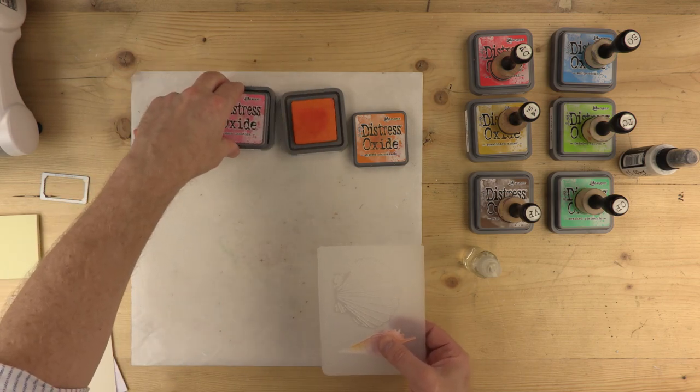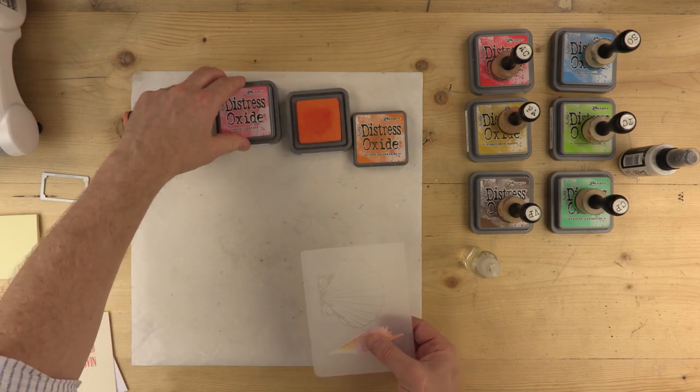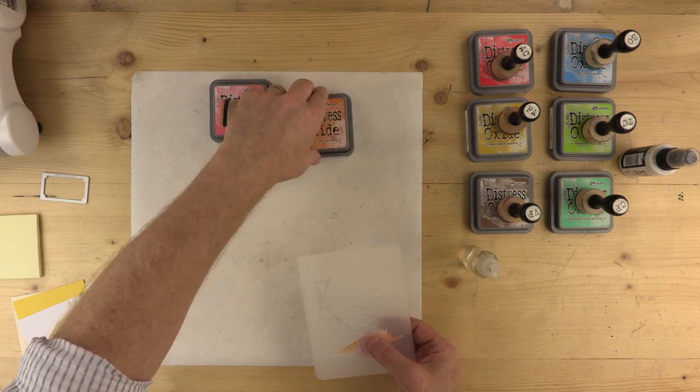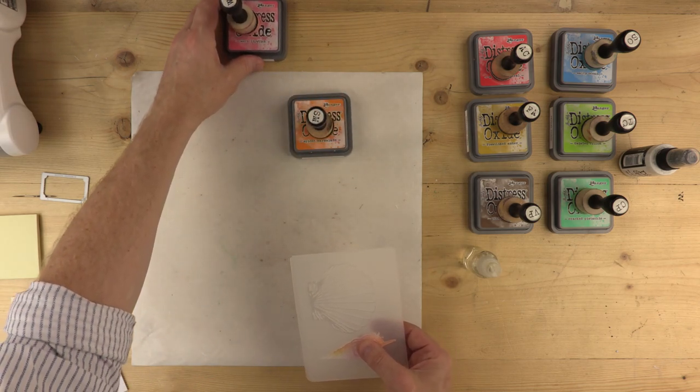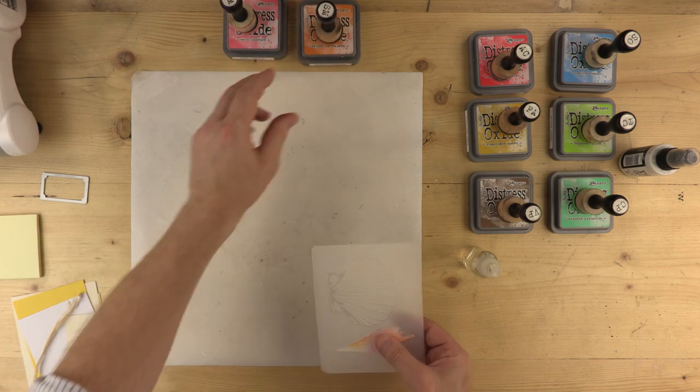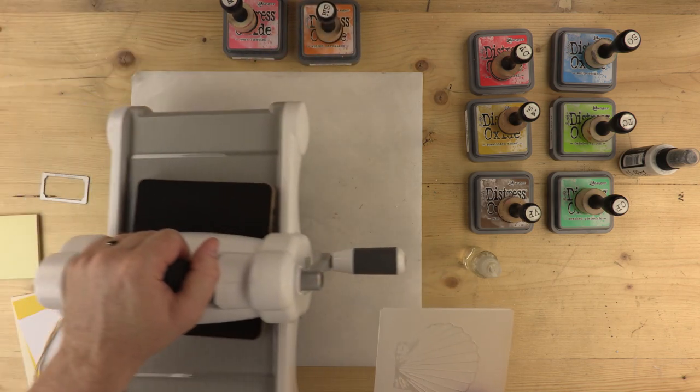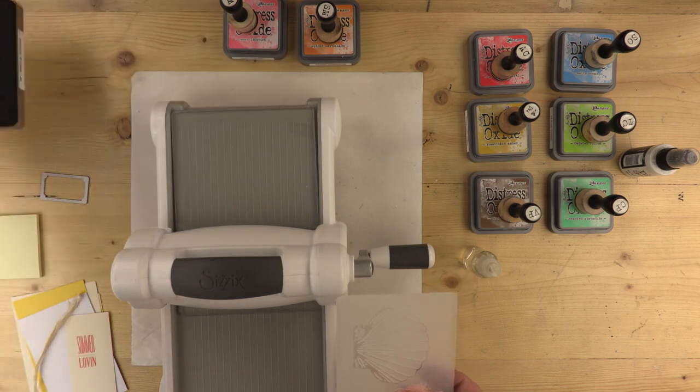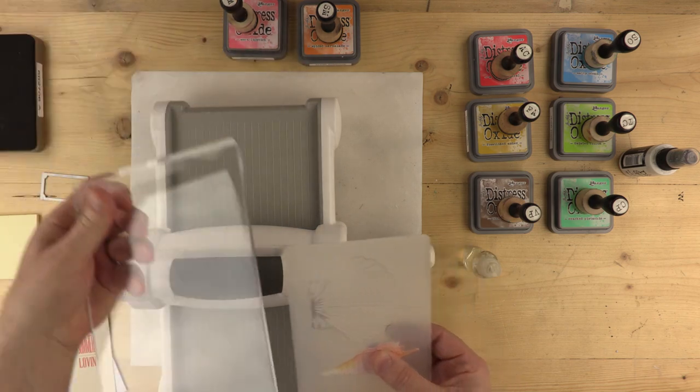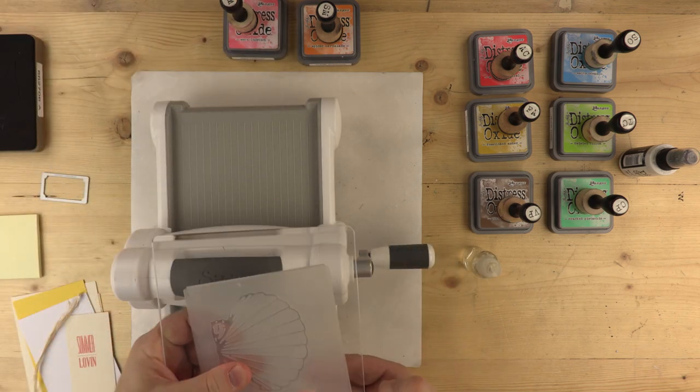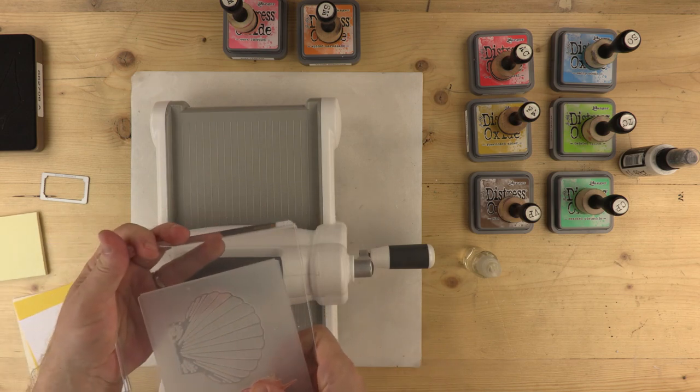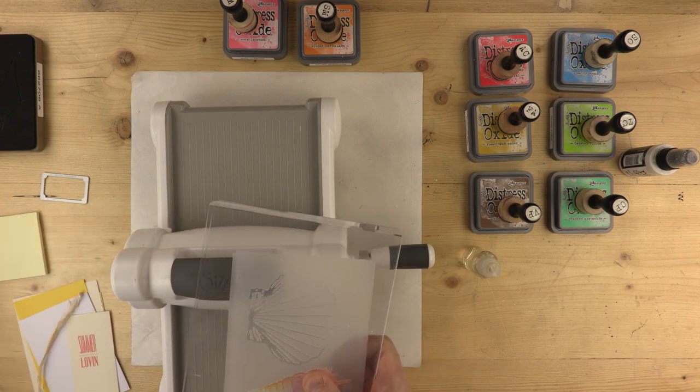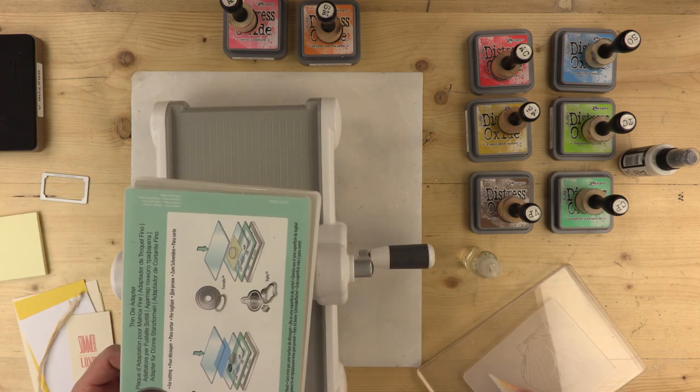So let's take these paints or inks rather out of the way just for the time being. I'm going to bring my machine back in. So there we have it. There's the die. And this time again, as before, I'm going to sandwich my folder between the two cutting plates.